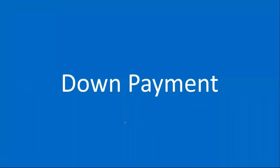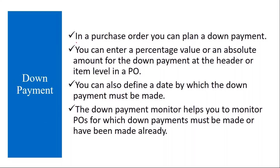We will start with down payment first. In a purchase order, you can plan a down payment. Sometimes when you purchase material from a supplier, the supplier may ask you to make some initial payment — even before he delivers the material — like 10% or 20% of the total PO value. It depends. You pay some amount in advance to the vendor before material delivery. That is called down payment.